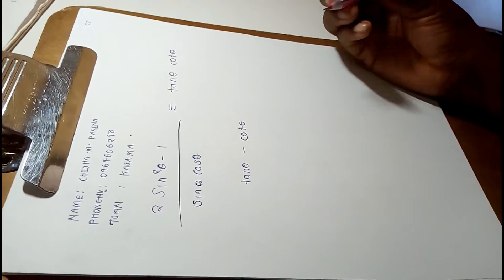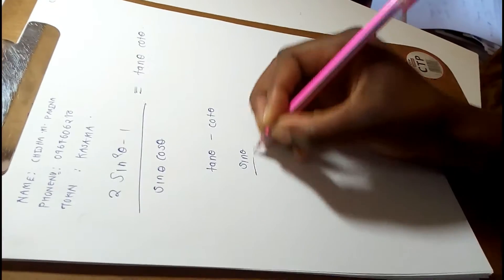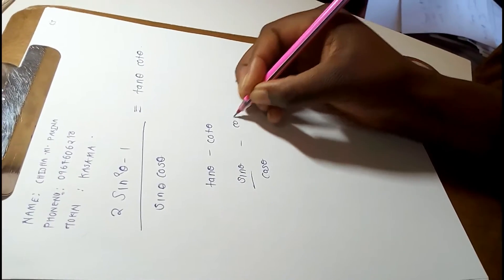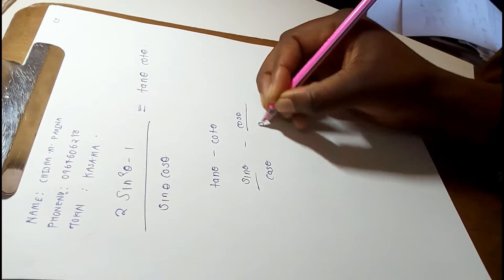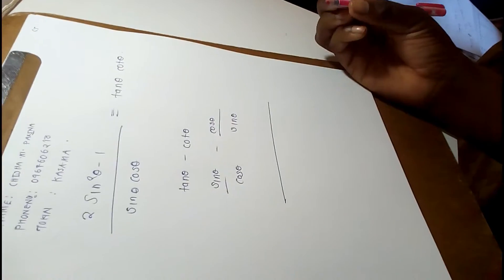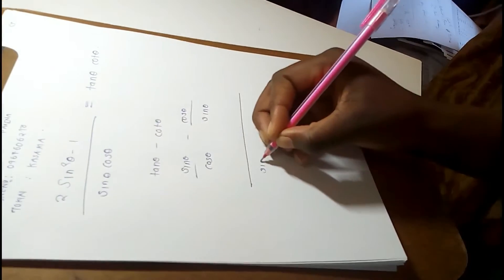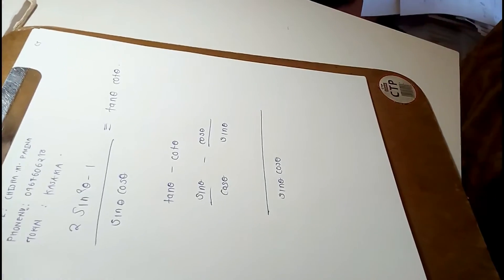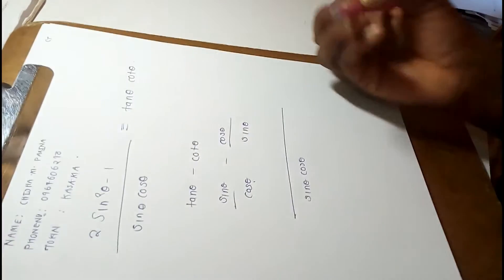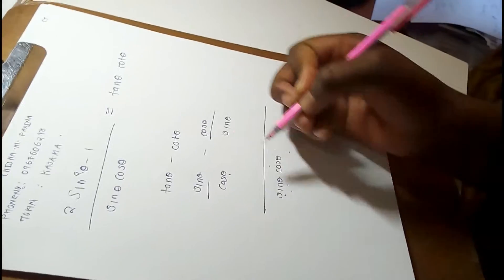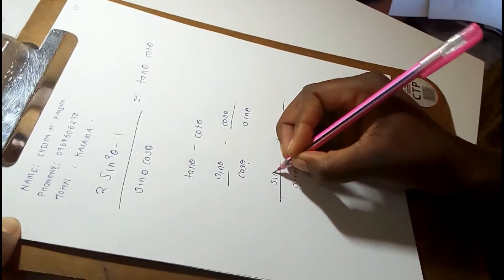We know that tan theta is equal to sine theta over cos theta, and cot theta is equal to cos theta over sine theta. I'm going to find the common denominator, which is sine theta cos theta. Then I'll apply the general rule for subtraction: cos theta into sine theta cos theta — the cos theta cancels — giving sine theta, and sine theta multiplied by sine theta gives sine squared theta.